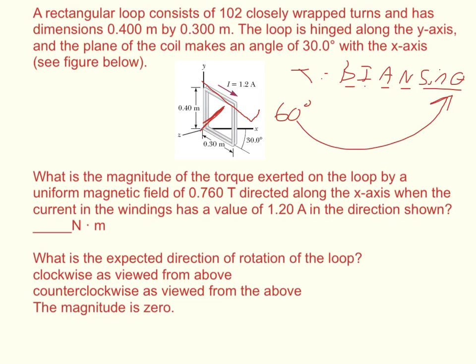Absolutely everything else is already in SI units. There's 102 loops, so that goes into N. The area is going to be 0.4 times 0.3, so you'll get 0.12 meters squared. The loop gives you the angle, so you take 90 minus that angle to get 60.